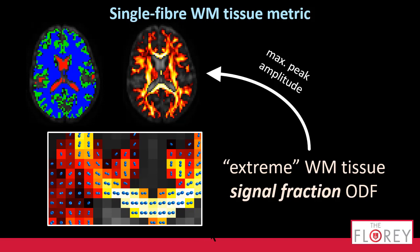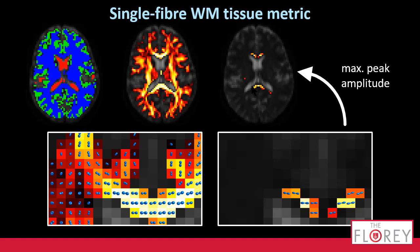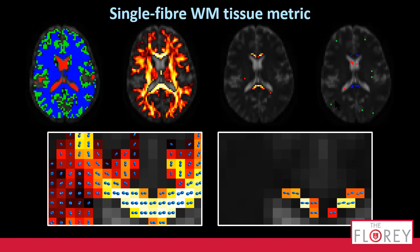What I didn't tell you yet is that in this image here, I've only computed this up to LMAX 2. That's because we figured that's far more robust. From there we get this map, and that's actually already a single-fiber white matter tissue metric itself. From that, we select the top one percent of this metric. Those voxels we are going to retest — now doing exactly the same thing, albeit at LMAX 6 to refine this a little bit. That gives us again a new metric, and of that we select half of the voxels. Then we have our final voxels.